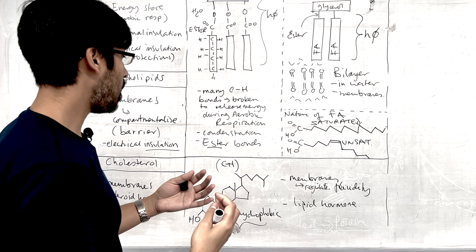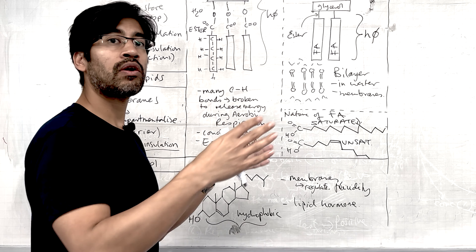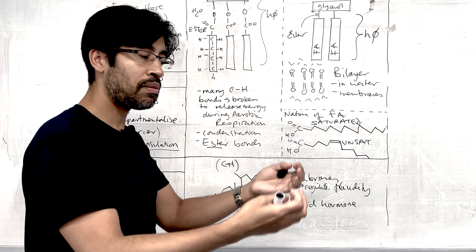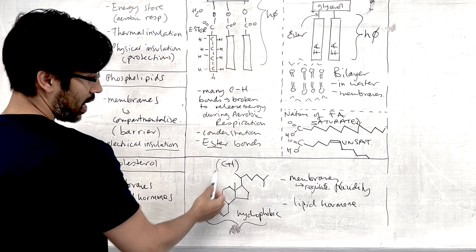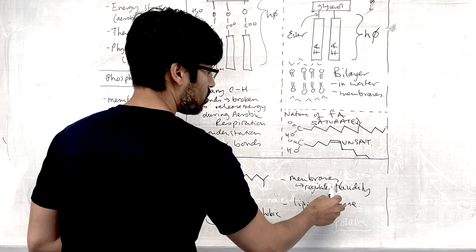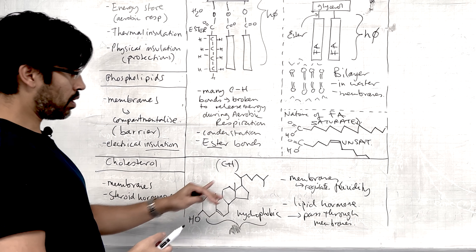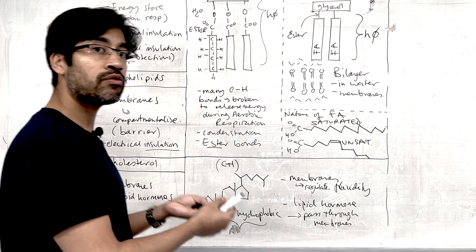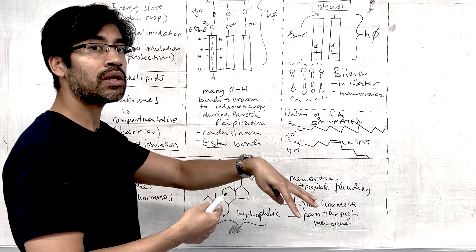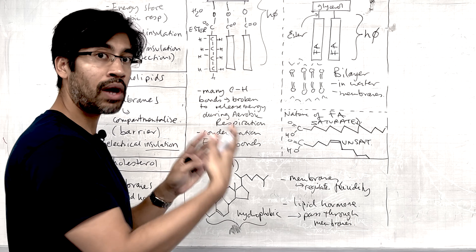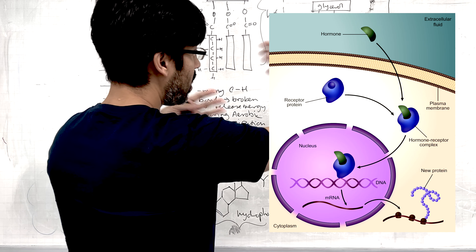The bilayer forms with the phosphate head interacting with the water particles, while the fatty acids are hydrophobic — they face away from the water, repelled by it, and interact with the other fatty acid tails. This forms a barrier to movement. You can see how the phospholipid structure is perfectly in line with its function of forming membranes and barriers, enabling compartmentalization.